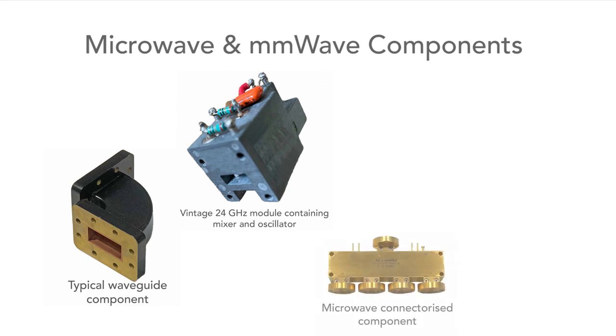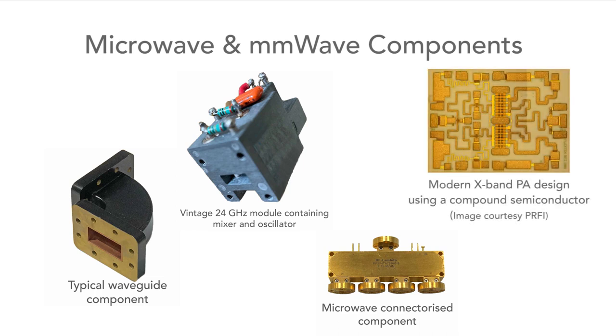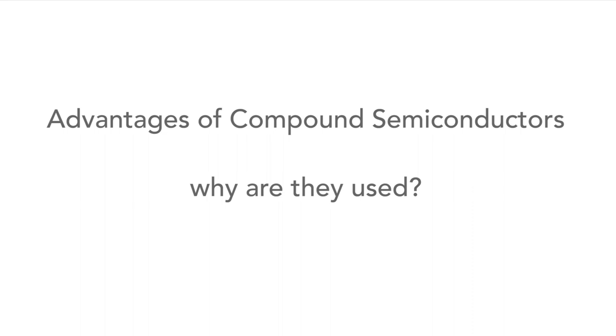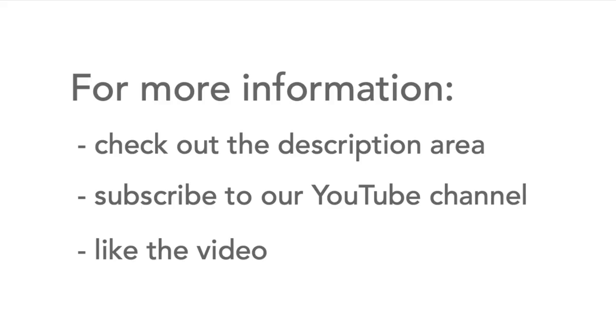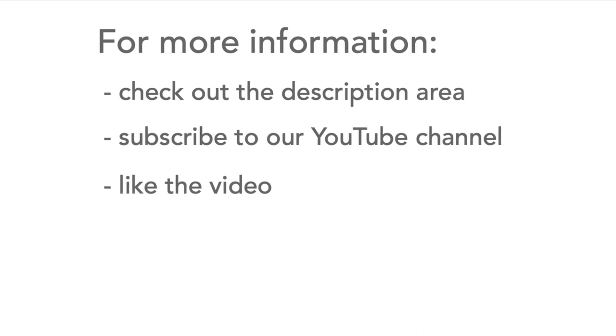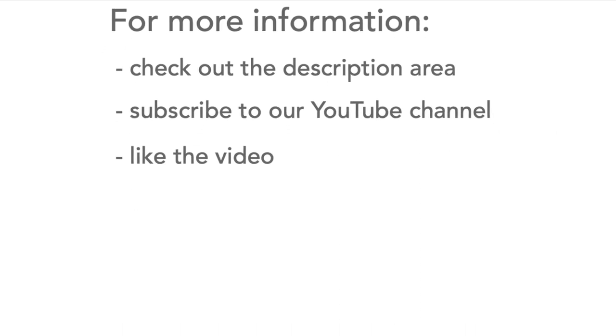Originally, microwaves were associated with waveguides and unusual semiconductor devices specific to microwave use. Today the technology has advanced significantly — waveguides are still used in some areas, but semiconductor technology has progressed greatly. At higher frequencies, compound semiconductors are typically used, such as gallium arsenide, gallium nitride, and indium phosphide. Gallium arsenide and gallium nitride both operate at higher frequencies, and gallium nitride offers much higher power density compared to gallium arsenide, giving more power for the same chip size — which is very positive for many applications.